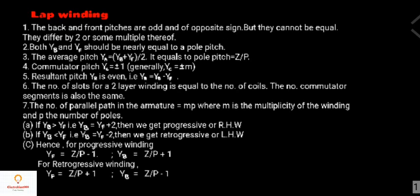The resultant pitch Yr is always even; for lap winding, resultant pitch equals back pitch minus front pitch. The number of slots for two-layer winding equals the number of coils. The number of commutator segments is also equal to the number of coils. The number of parallel paths in the armature equals m times P, where m is the multiplicity factor of the winding and P is the number of poles.